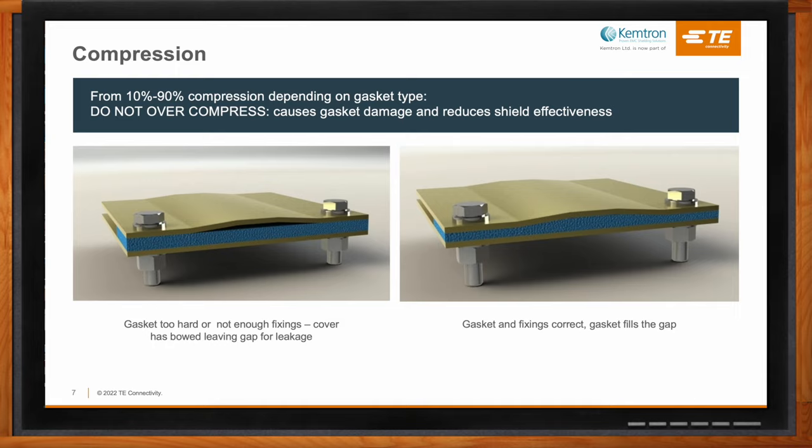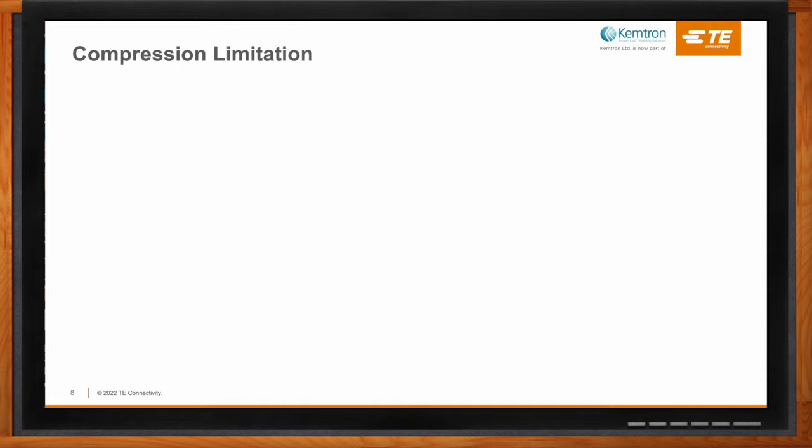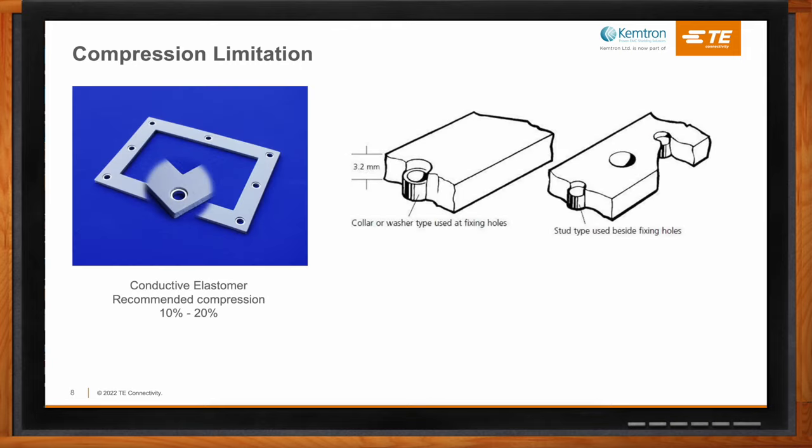How is this compression limited? Compression can often be limited by the design of the metalwork of the assembly itself. However, if that's not possible, we can also incorporate it into the gasket — we can add either a collar into the hole position of the gasket, or we can add two compression studs either side of each hole location.